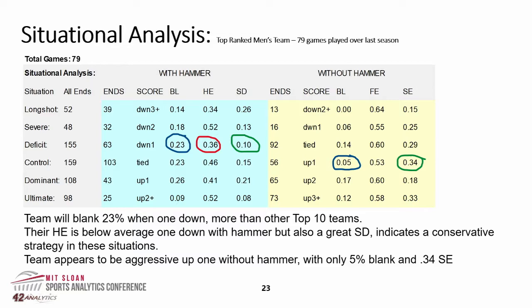We use these stats to dig deeper into teams' profiles. We break down every scenario into a title: long shot, severe deficit, control, dominant, ultimate. All that does is take the numbers out of the head of the players and put it into a more simplistic view. When you look at the expected win rate at any given time, it's pretty consistent for the score differential. Being down one with the hammer puts you in a deficit situation, somewhere between 32% and 45% to win the game. The blank ends column shows the percentage of time an end is blanked, which indicates the aggressiveness of an opponent — are they playing a more open, conservative style, or putting rocks in play? The higher that number, the more likely they are to play an open game.